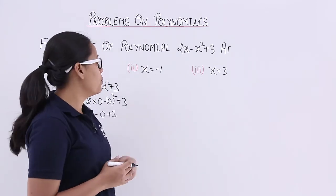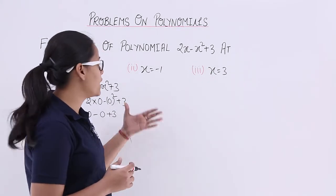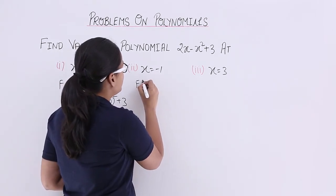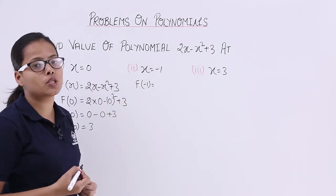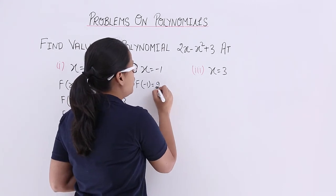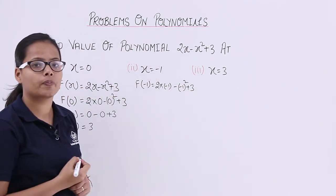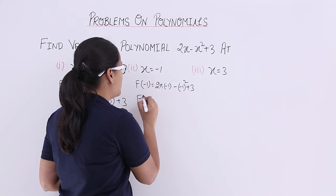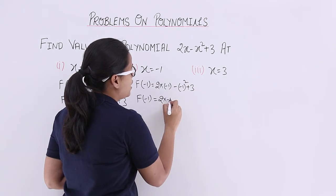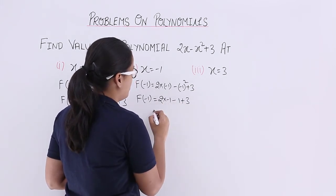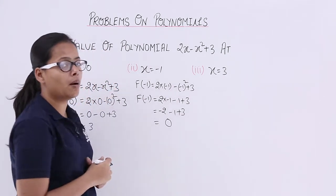Now let's take the second problem which is x = -1. Let's find out the value of this polynomial at x = -1. So f(-1) is equal to 2 × (-1) - (-1)² + 3. Let's calculate: 2 × (-1) - 1 + 3, which gives us -2 - 1 + 3. The final value becomes 0.